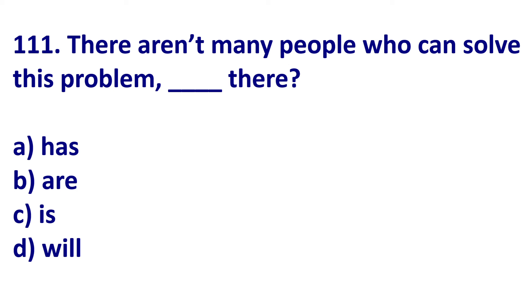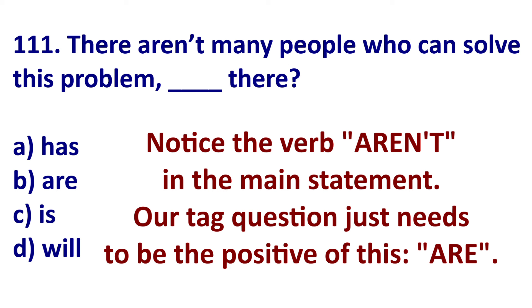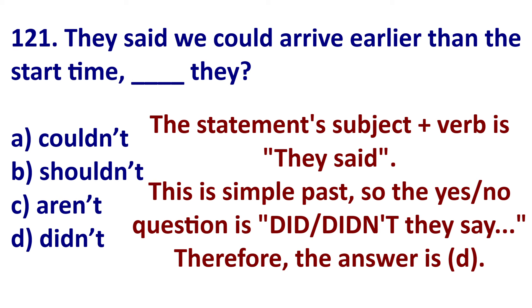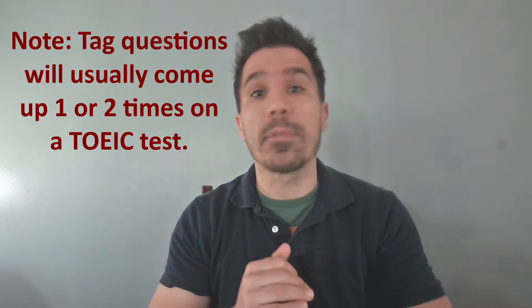Let's look at TOEIC question 111: 'There aren't many people who can solve this problem.' We're using simple present — 'aren't' — not 'weren't' or 'won't.' So we make it positive: 'are there?' The answer is B. Another question: 'They said we could arrive earlier than the start time, blank they.' The original is 'they said' — simple past positive — so going negative in the past gives us 'didn't they?' So the answer is 'didn't they?'